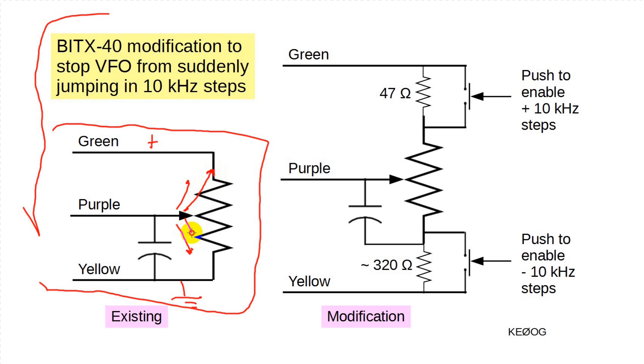Similarly, when the voltage is low enough, the VFO jumps to stepping down at a 10 kilohertz per step rate. You can see why I call it the galloping VFO problem.